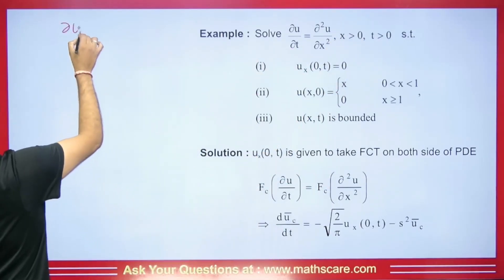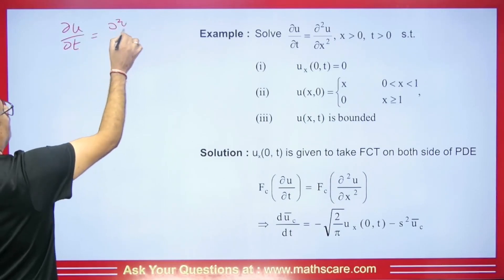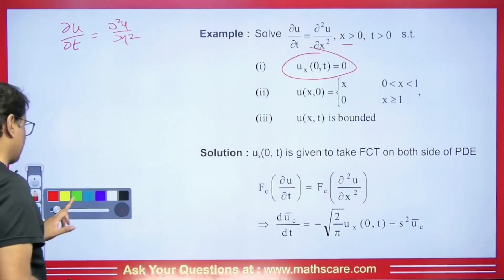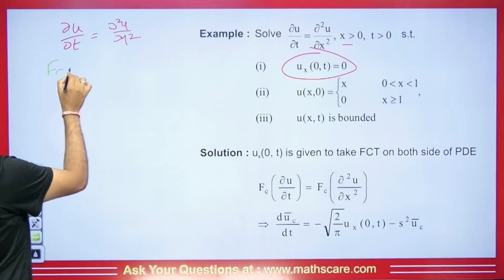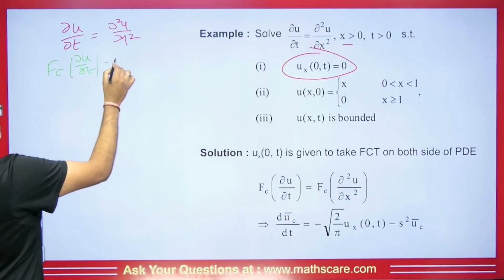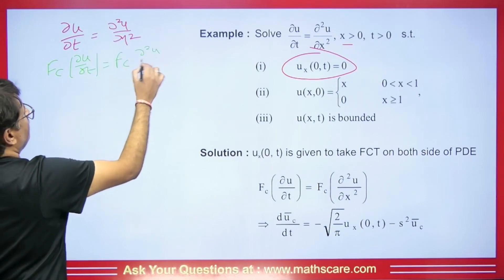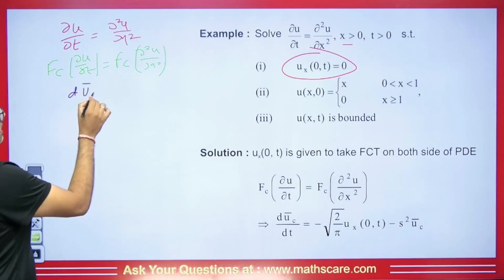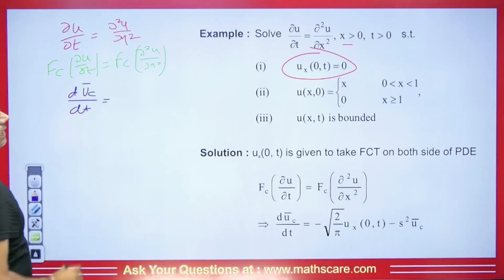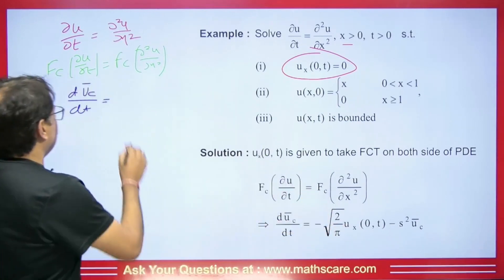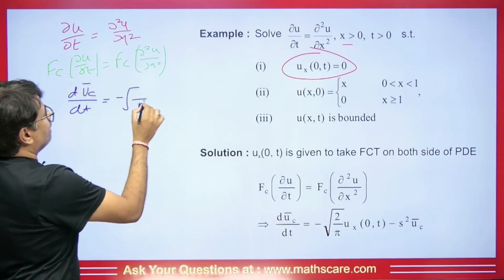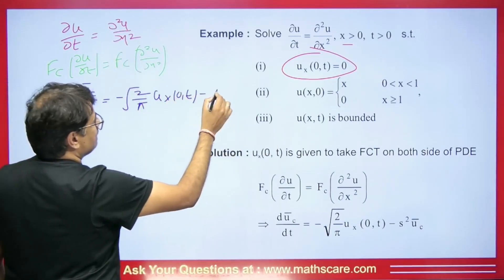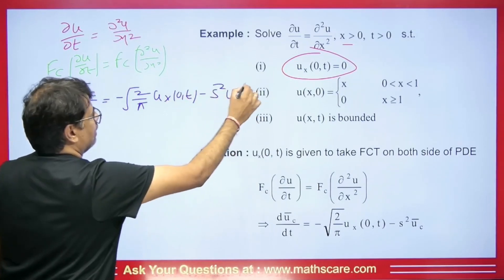The equation is del u/del t equals del²u/del x². Since u_x(0,t) is given, we apply the Fourier cosine transform to both sides. On the left we get dū_c/dt. On the right, we get: minus root(2/π)·u_x(0,t) minus s²·ū_c. The value of u_x(0,t) in our question is given as 0, so that term vanishes.